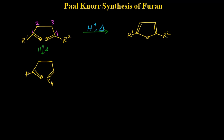Other substituents R1 and R2 remain as they are. Now here we have a positive charge. In the next step, the proton present on this carbon — the lone pair between this carbon and the hydrogen — donates like that, the positive charge gets stabilized, and we get the next structure.